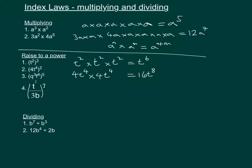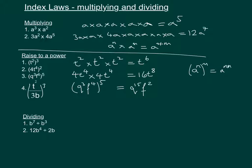We can state a general rule: a to the power of n, raised to the power of m, equals a to the power of n times m. Applying this to the third example, we've got q to the power of 3 and f to the power of 4, all to the power of 5. So we get q to the power of 15 and f to the power of 20.